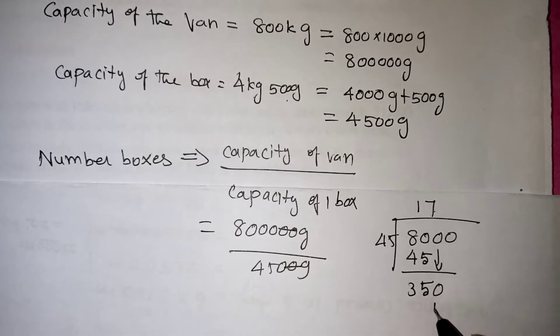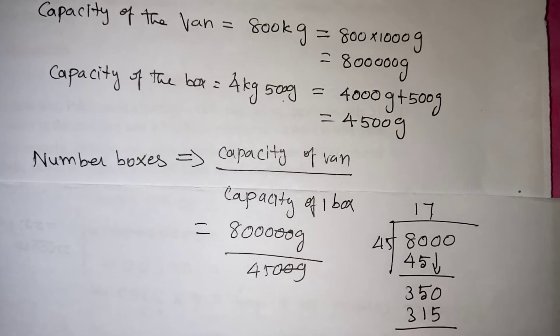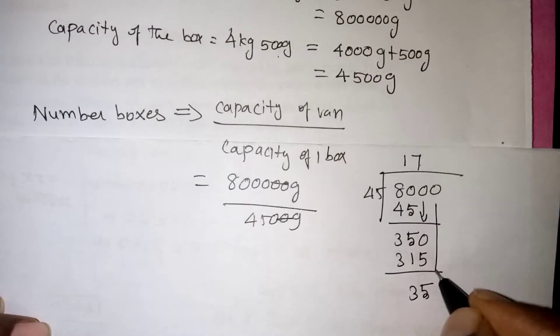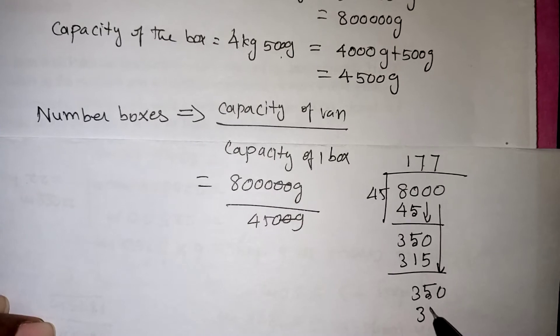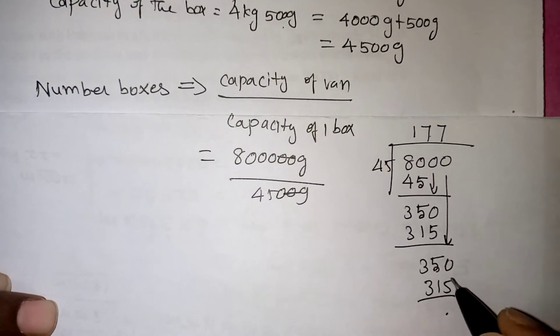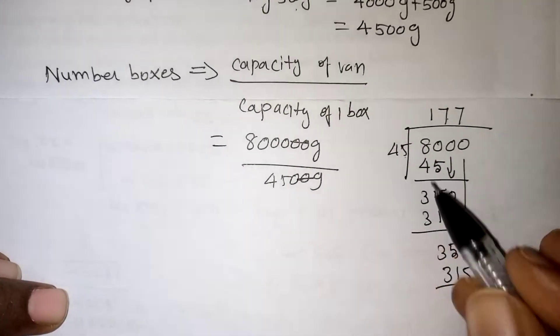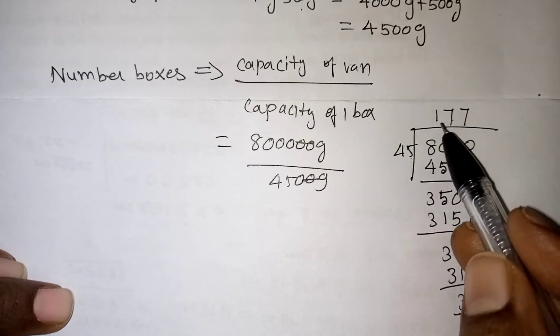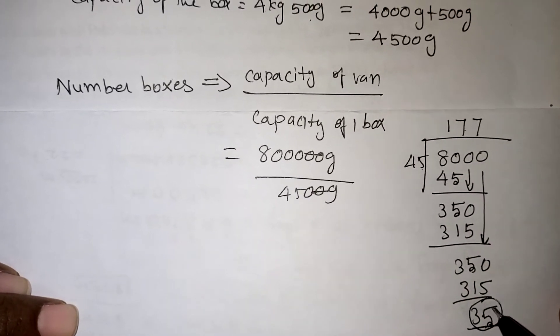The next number is 0, and 45 sevens are 315, balance 3 we are getting. Next number, subtraction again gives 350. 7 times 315, and remainder we will be getting. If you subtract, 5 and 4 minus 1 is 35. 35 is less than 45, so we cannot go for division now.